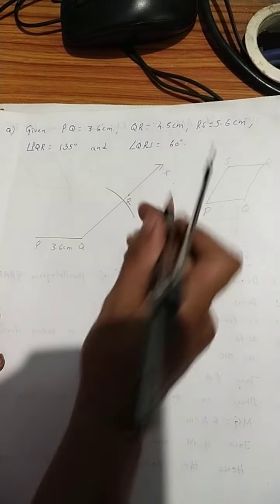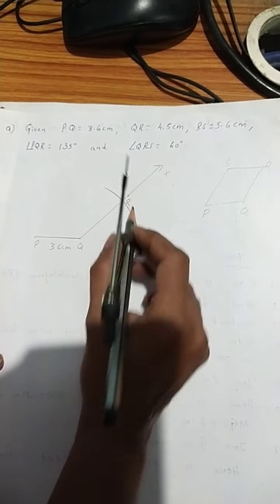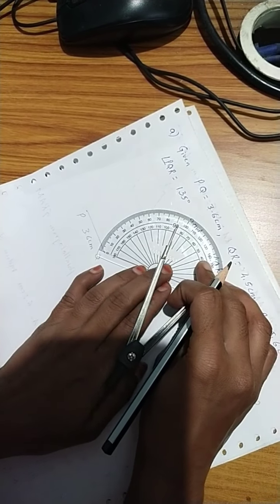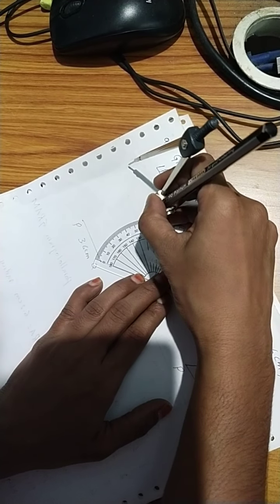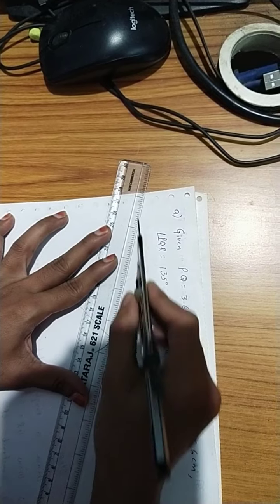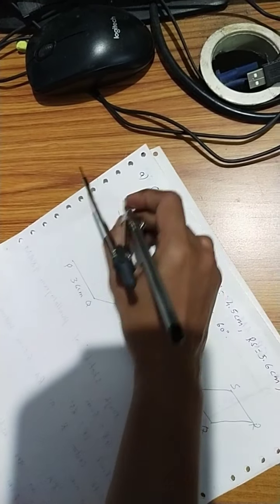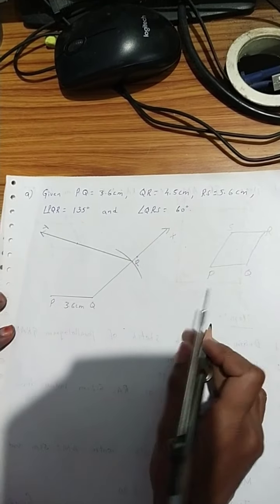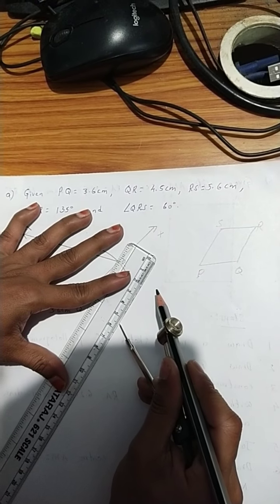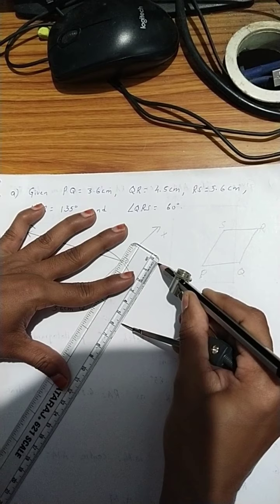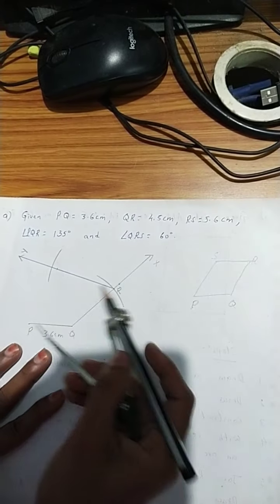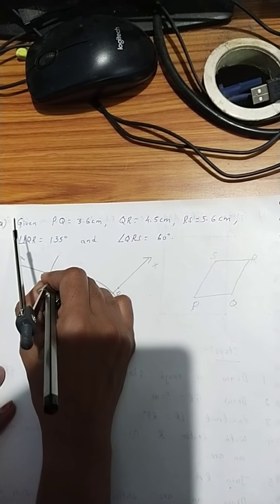Next, angle QRS equal to 60 degrees. Here angle R will form now. Keep the protractor on R. On the outer scale, take 60 degrees and join the line — this will be Y. RS equal to 5.6 cm: measure 5.6 cm with ruler. Keep it on R and draw an arc. This line and arc will intersect here. Put the point S.